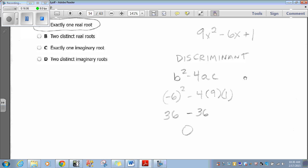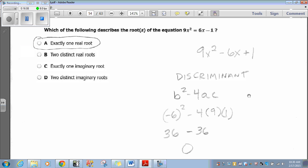Now, if you remember from the laws of discriminants, if your discriminant equals 0, it means there's only one real root. If your number is a positive number, you'd have two distinct real roots. And if your number is a negative number, you'd have two distinct imaginary roots. But since our number is 0, it's exactly one real root.